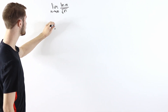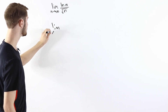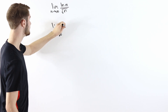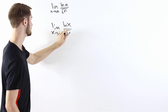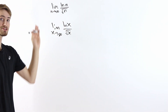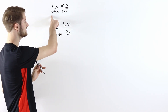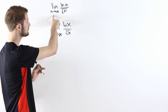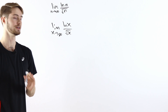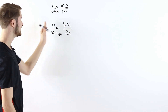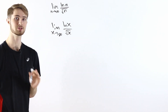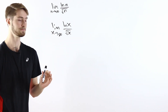One way to compute this limit is to first consider the limit as x goes to infinity of the natural log of x over the square root of x. These two limits are the same except that in the first case, as n goes to infinity, we're only letting n be an integer, whereas when we take the limit as x goes to infinity, we're letting x be any real number.